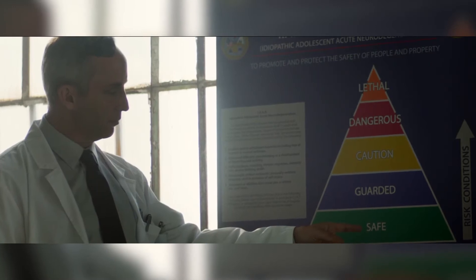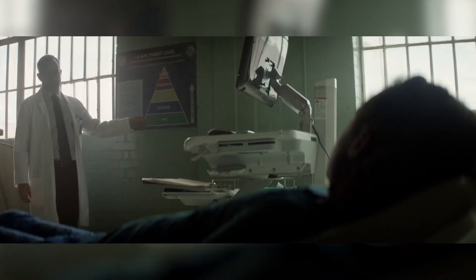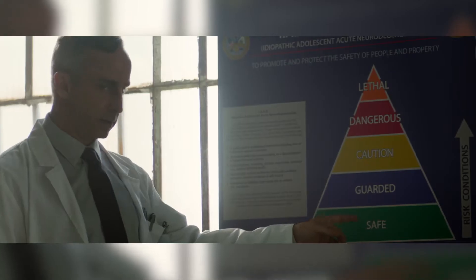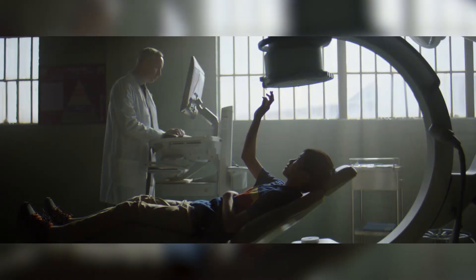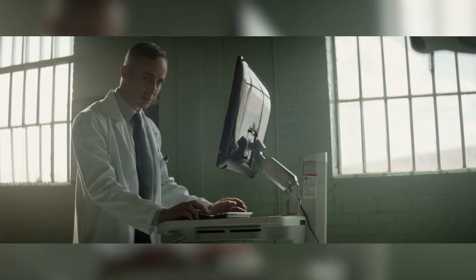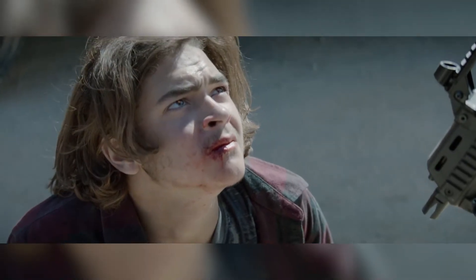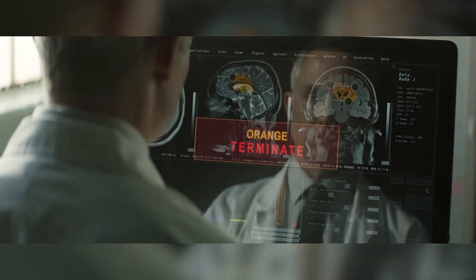The doctor first explained to Ruby that each of the kids has an assigned color that indicates their disorders: green for basic enhanced intelligence, blue for kinetic abilities, gold for those who can manipulate electricity, and the rarest of the group, reds and oranges, who can both be dangerous and lethal. Children falling under these colors are eliminated immediately. The system detected that Ruby's an orange. Without a second thought, the doctor grabs the syringe, uncaps the needle, and runs towards the little girl — he was ready to terminate Ruby.